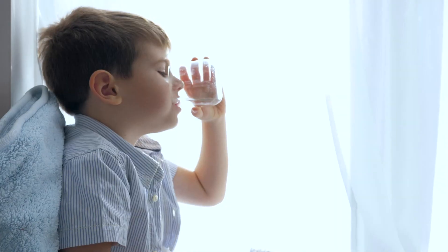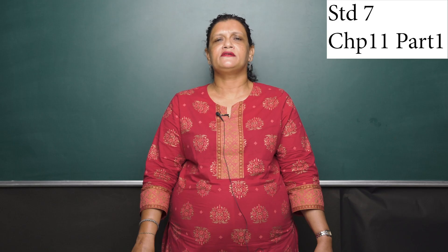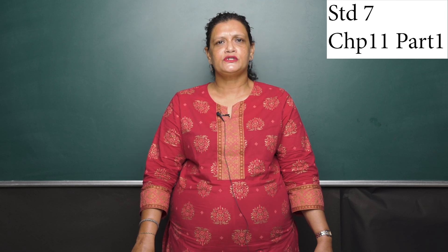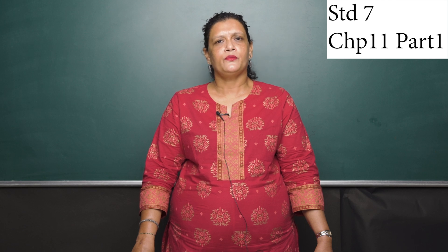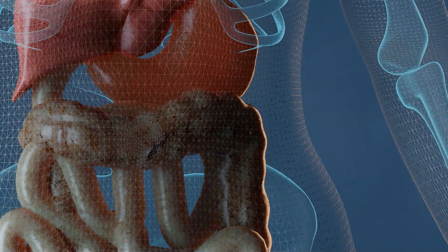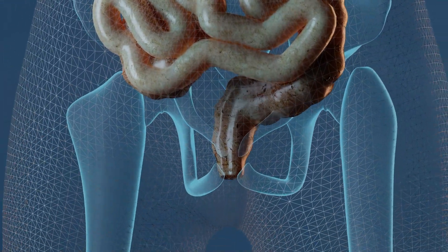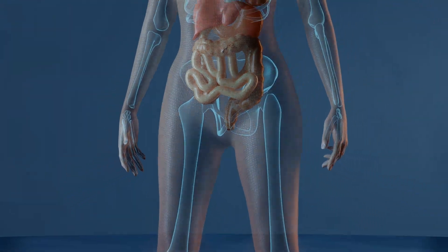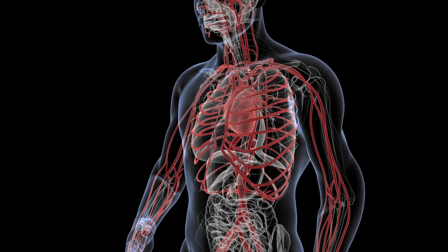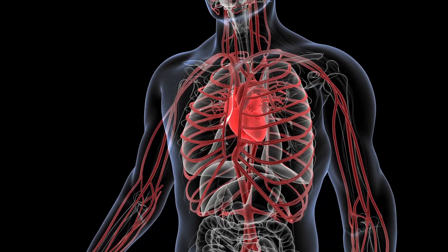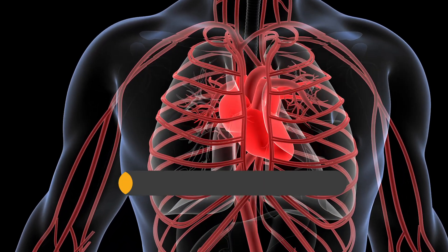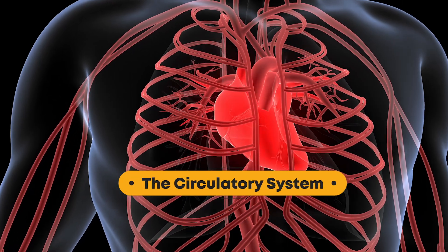Food, water and oxygen are very important for the survival of an organism. This food, water and oxygen needs to be transported to all parts of the body. Simultaneously, all the waste matter from various parts of the body needs to be removed. This transportation is done by the heart and various blood vessels, and so the heart and the various blood vessels are referred to as the circulatory system.